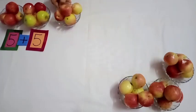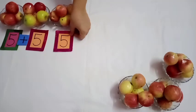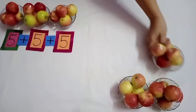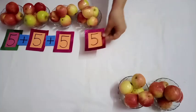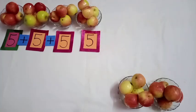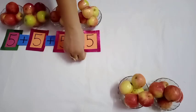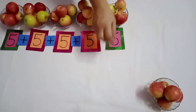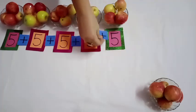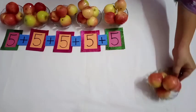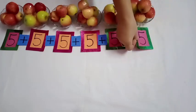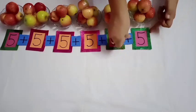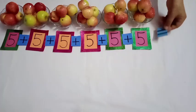In the third bowl, there are also five apples. Ten plus five is fifteen apples. In the fourth one, there are also five apples. Twenty plus five is equal to twenty-five apples. And in the last one, there are also five. Twenty-five plus five is equal to thirty apples.